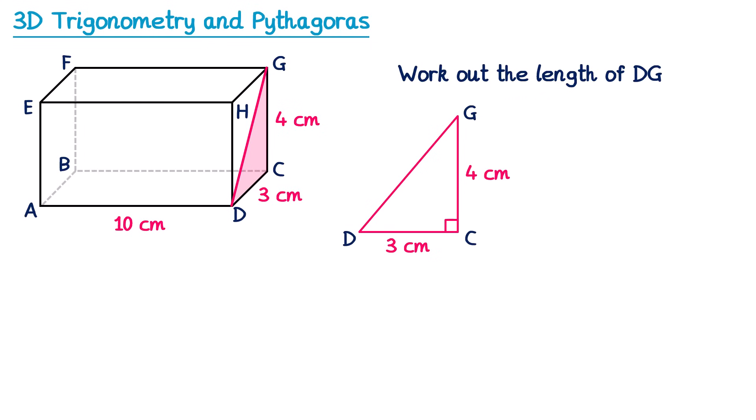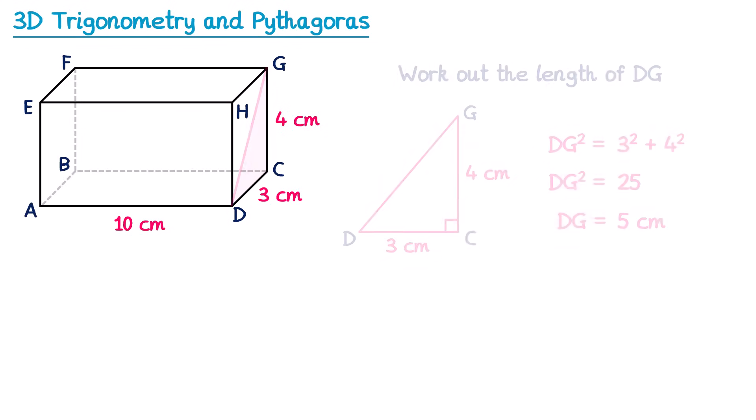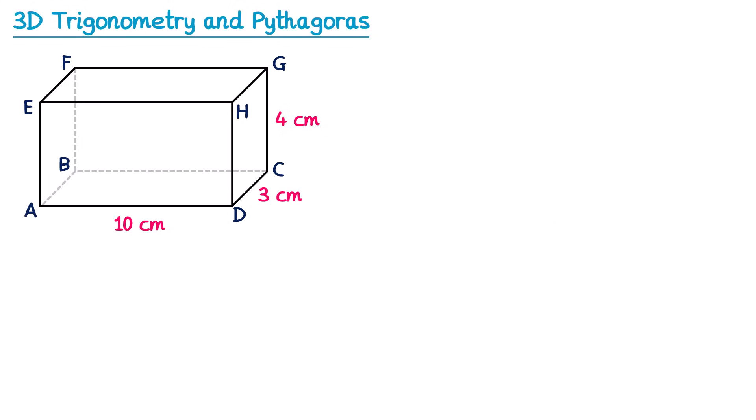So triangle DCG looks like this, and we have the length on the bottom from D to C, which is 3, and the height from C to G is 4. We're trying to find the length of DG, which is the hypotenuse, so we can just use Pythagoras. DG² = 3² + 4² = 25, so DG² = 25. Square rooting both sides, DG = 5 centimetres.